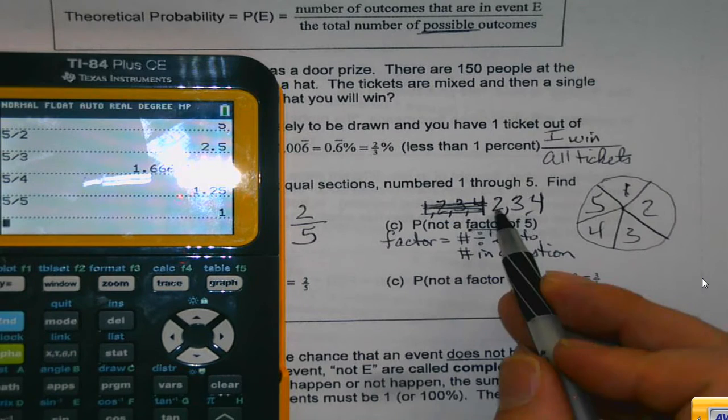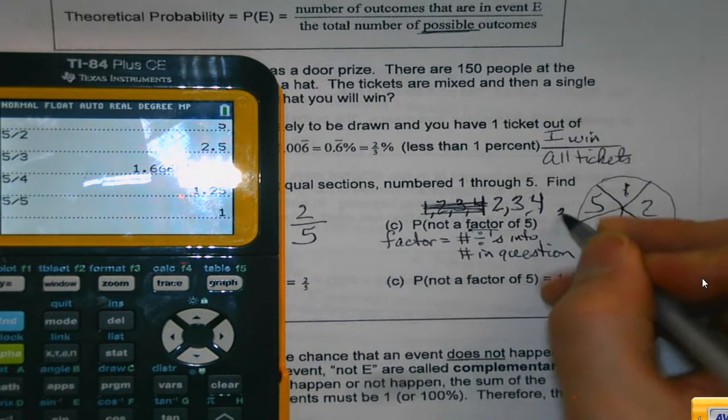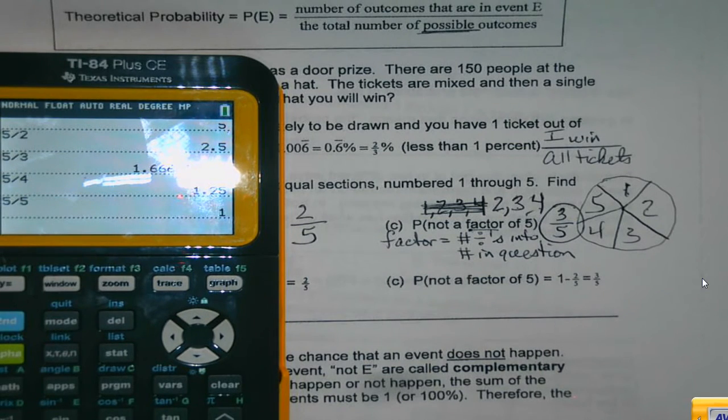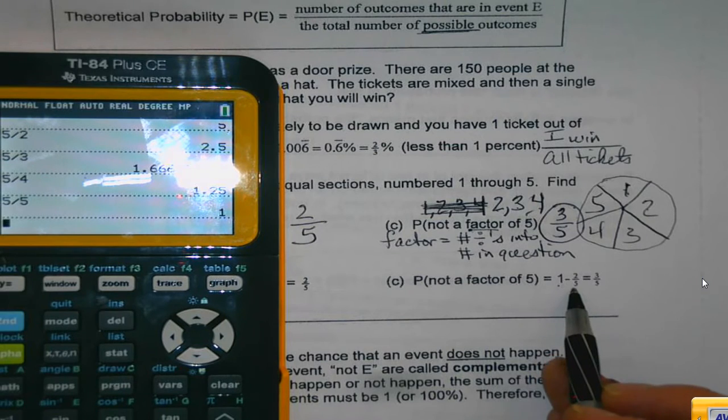So not a factor of five would be these three, or three out of five. But the other way you can do it, if you happen to notice underneath each of these, they're already done mathematically. Like, why'd they do one minus two fifths?